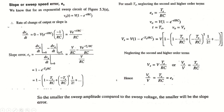Substituting T = 0 and T = TS into this equation: at T = 0, e^0 = 1, so we get V/RC. At T = TS, we get V × e^(−TS/RC) / RC. Substituting these into the sweep speed error formula and dividing by V/RC, we simplify to get 1 − e^(−TS/RC).